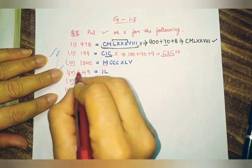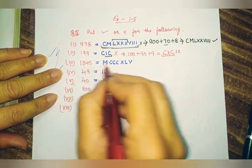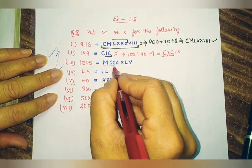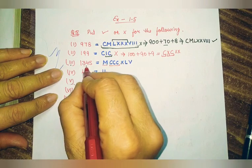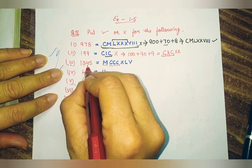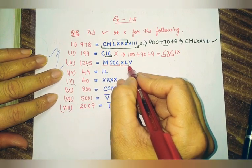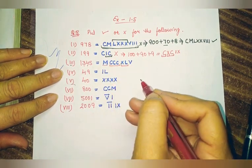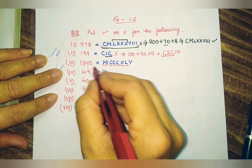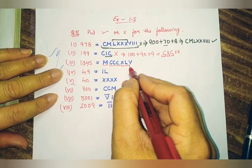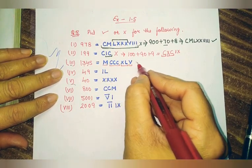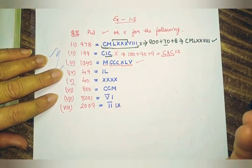Next: 1000 is M, 300 is three times C (CCC), then 40 is 50 minus 10 (XL), and 5 is V. That number is written correctly as MCCCXLV.